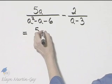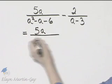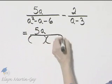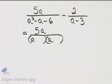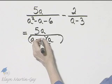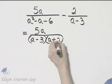To find that least common denominator, let's factor that first denominator. I'll have A and A, two factors of negative six whose sum is negative one, that would be negative three and positive two.